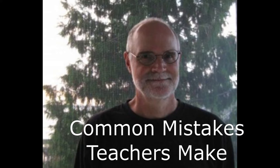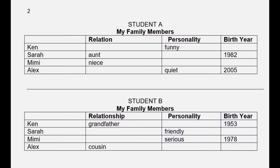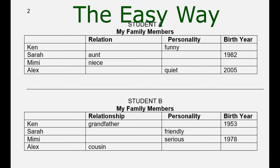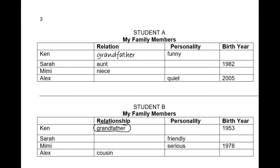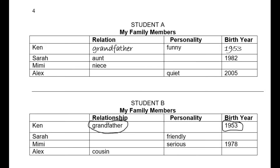Let's start by looking at some common mistakes in the charts that teachers use. Students are put in pairs — student A and student B — and they cannot see each other's paper. My colleague will help me demonstrate a weak point about these charts. This is how many students do this activity — we'll call it the easy way. You'll be student A and I'll be B. You want to fill in the blanks in your chart by asking me questions. First, what is Ken's relation to me?